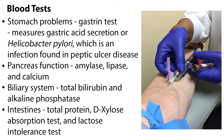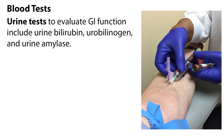Total bilirubin and alkaline phosphatase evaluate the biliary system. The function of the intestine can be evaluated with total protein, D-Xylose absorption test, and lactose intolerance test. Urine tests to evaluate GI function include urine bilirubin, urobilinogen, and urine amylase.